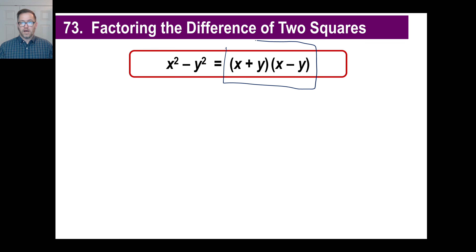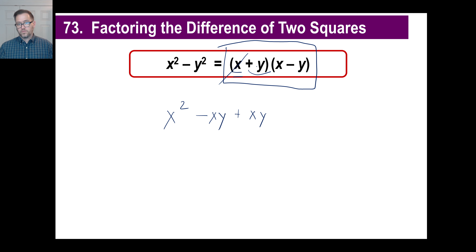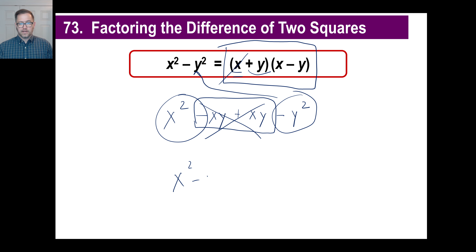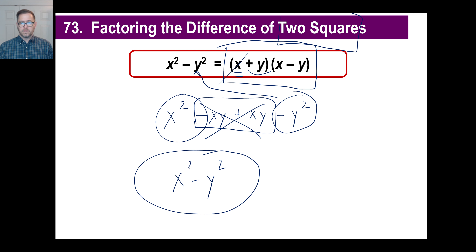Let's verify this. If the problem asks you to multiply (x + y)(x − y), take care of the x first: x times x is x squared, x times negative y is negative xy. Then y times x is positive xy, and y times negative y is negative y squared. Notice the two middle terms cancel, so you're left with x squared minus y squared — which is what we started with in the beginning.